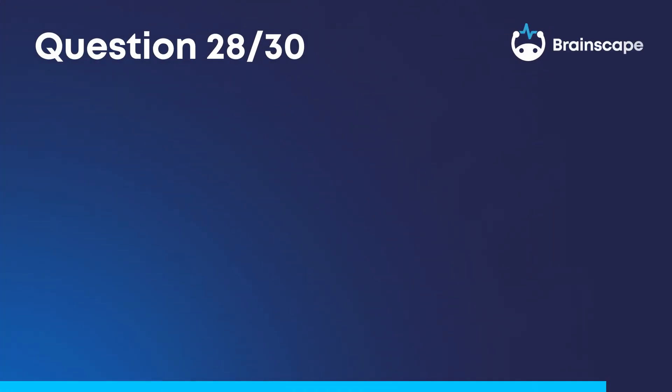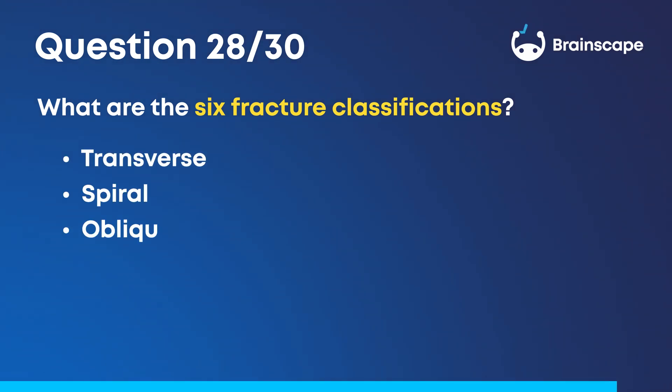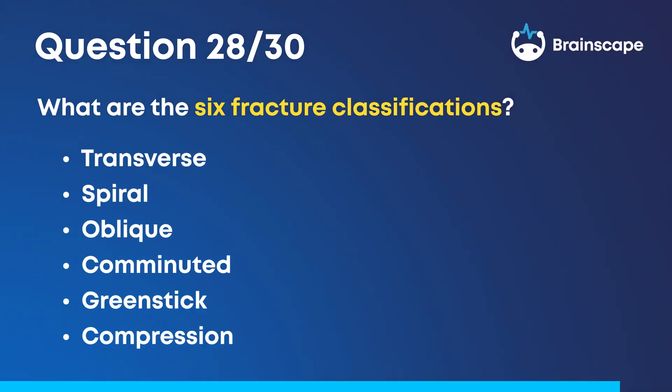Question 28. What are the six fracture classifications? Transverse, spiral, oblique, comminuted, greenstick, and compression.